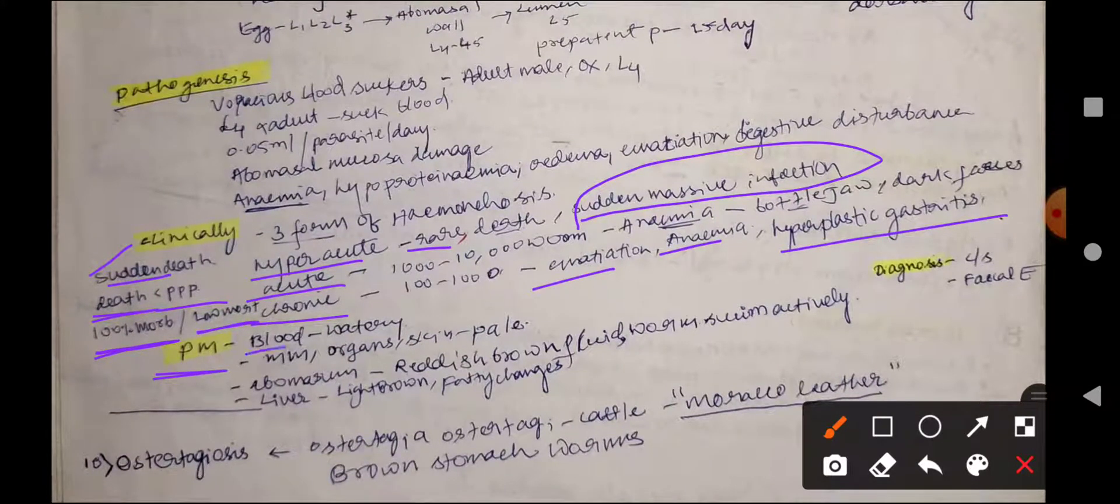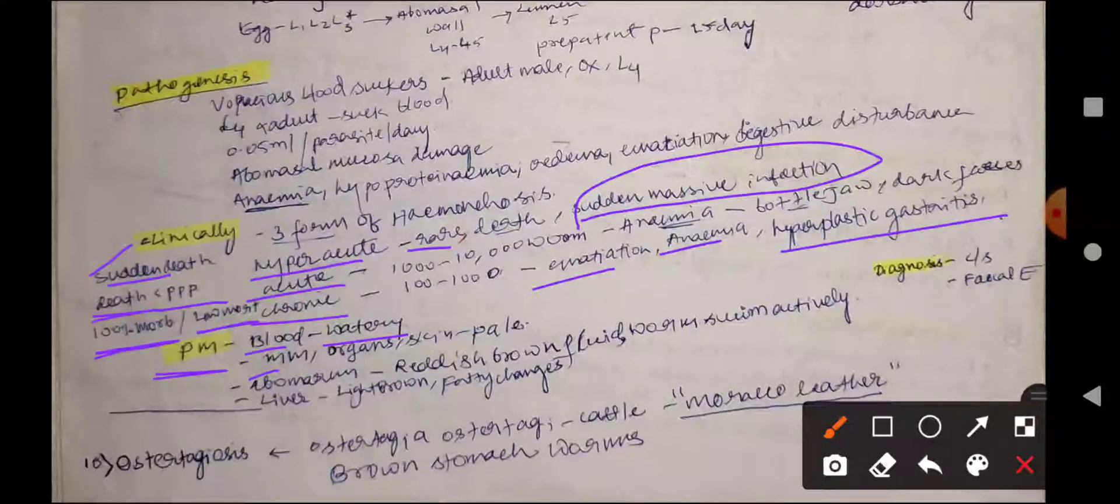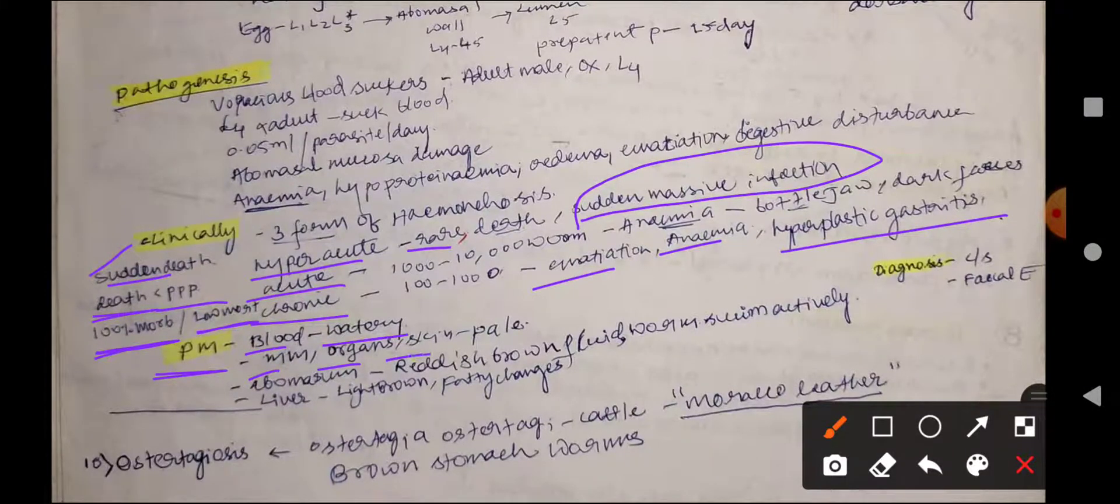Postmortem lesions include watery blood, and the mucous membranes, organs, and skin become pale in color.